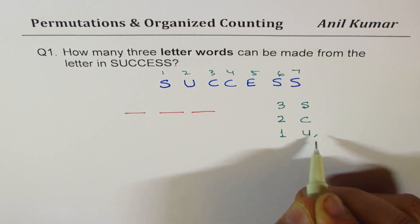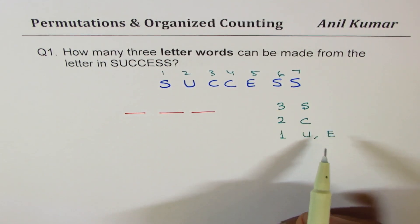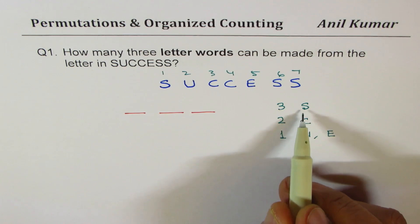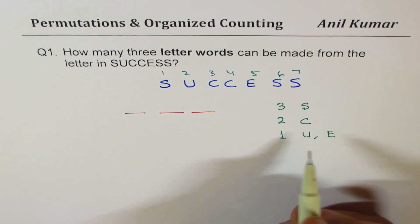One number of E. So let's count: one, two, three, four, five, six, seven. So these are all seven letters.